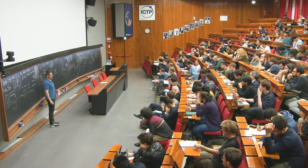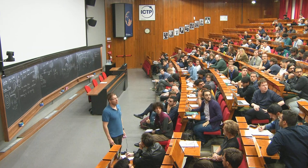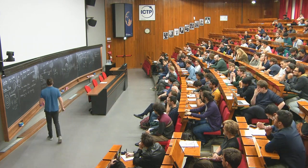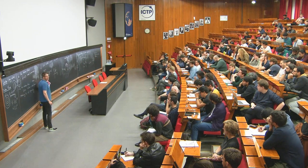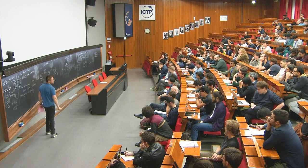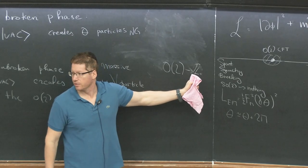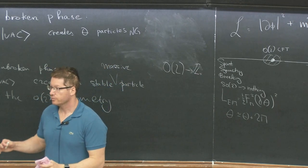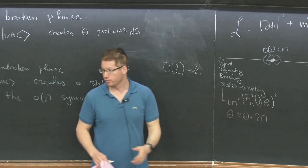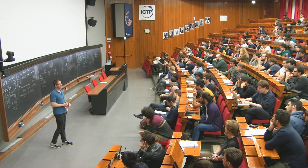Are there any questions before I switch to gauge theory? In the broken phase, in the original model there is O2 symmetry. In the broken phase, the SO2 part of O2 is completely broken — O2 is broken to Z2. This is spontaneous breaking, not explicit breaking — spontaneous breaking of O2 to Z2, or SO2 to nothing. This unbroken Z2 acts on theta by conjugating theta to minus theta. So theta to minus theta is the unbroken Z2.